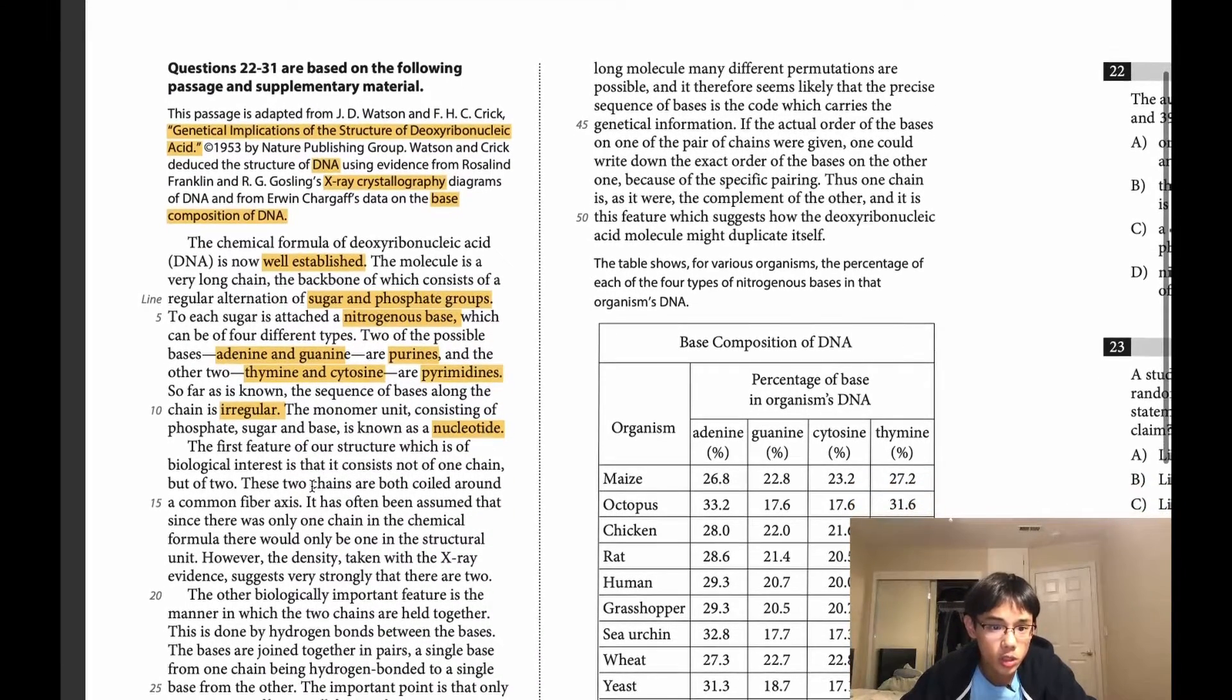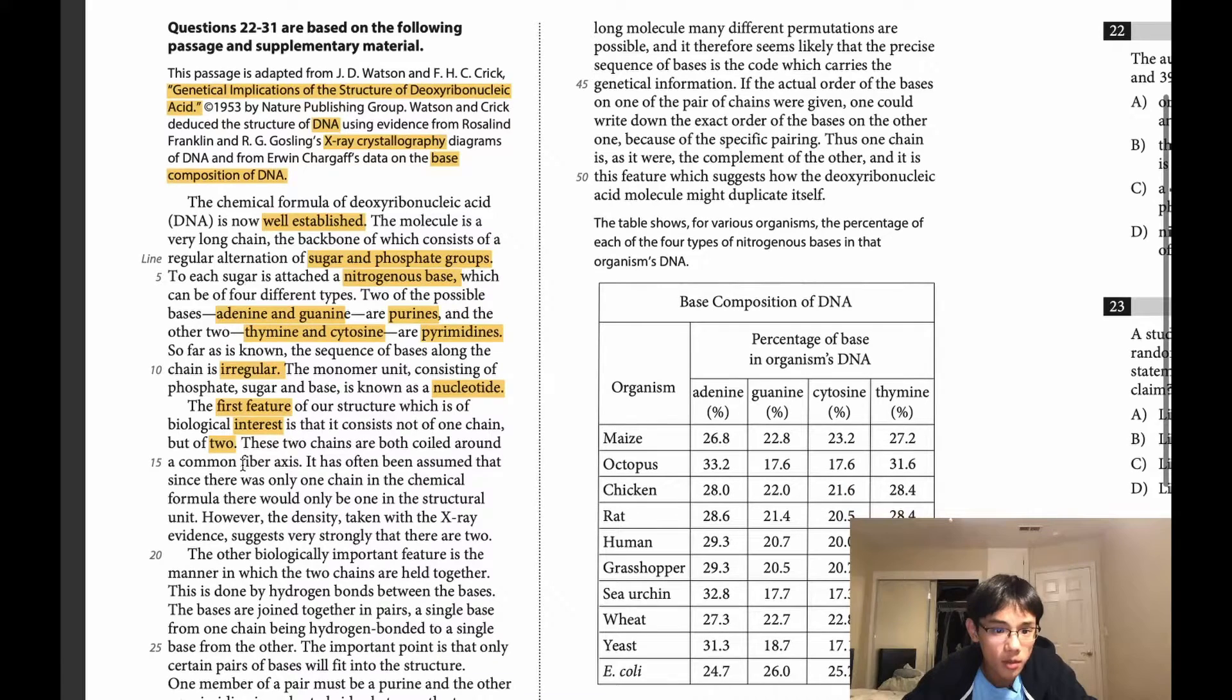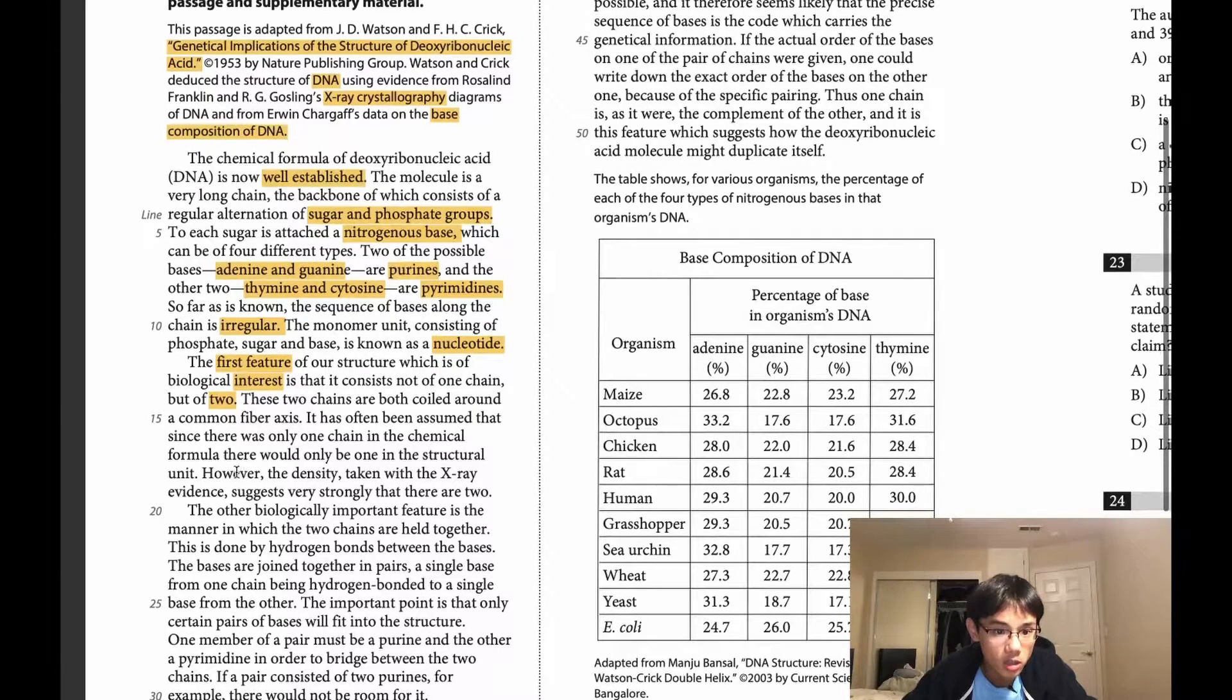The first feature of our structure, which is of biological interest. So this is indicative of a main idea because it's the first feature that is of biological interest. So we really need to take note of this feature of interest is that it consists not of one chain, but of two. So DNA is not a single helix structure. It's a double helix structure. These two chains are both coiled around a common fiber axis. It has often been assumed that since there is only one chain in the chemical formula, there would only be one in the structural unit. However, the density taken with x-ray evidence suggests very strongly that there are two. So x-ray evidence, x-ray crystallography evidence, indicates that there are two helixes, not just one.